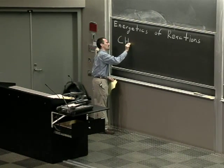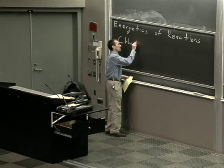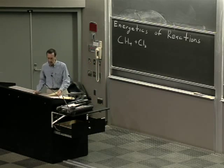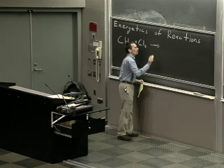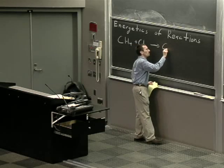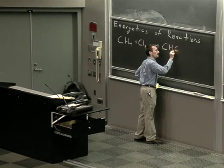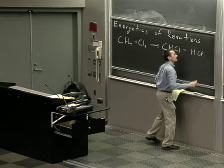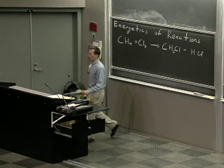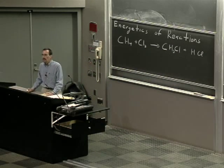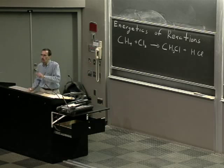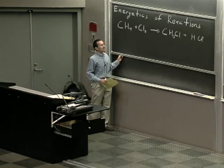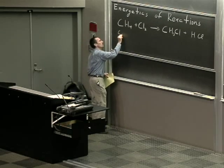If you take methane, CH4, and you mix it with chlorine — they're both gases — usually this is done in the presence of some heat or light. You can get chloromethane and HCl. This falls into the class of a substitution reaction.